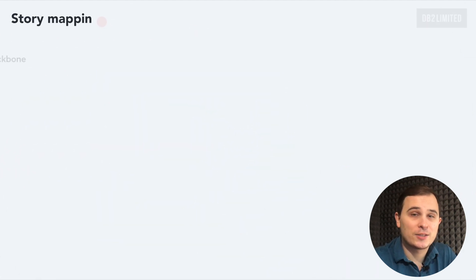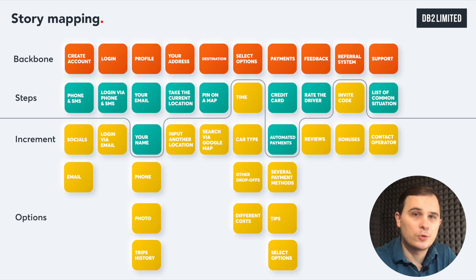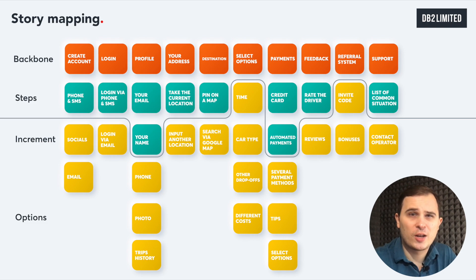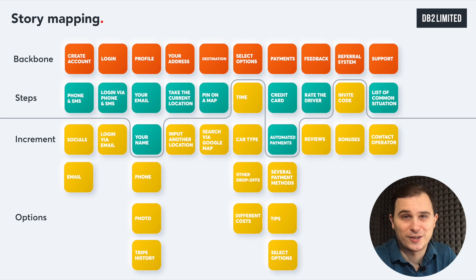Looking ahead to story mapping — this is a great tool which would help you describe your user flow and functions. For instance, if we are creating a passenger flow, we would identify via increment what functions are really important and what's not. Do you need Facebook or Google registration on the first iteration? No, you don't. Simple registration via mobile phone would be more than enough.